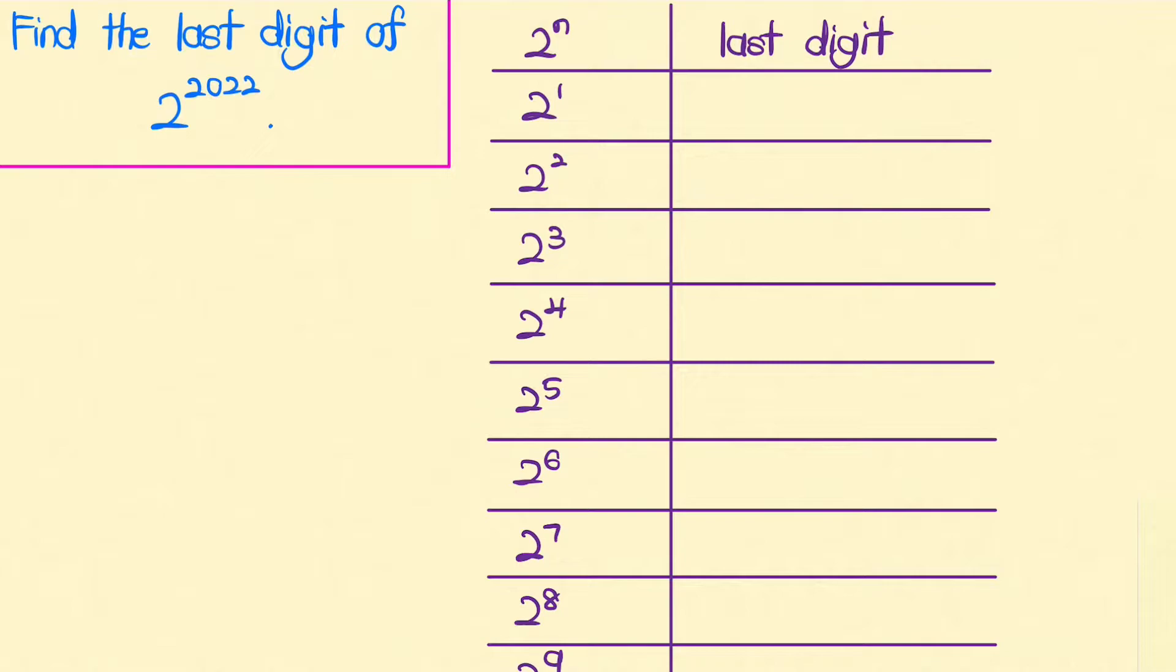We start with 2 to the power of 1, which is just 2, so the last digit is 2. And by continuing on we get the following result.